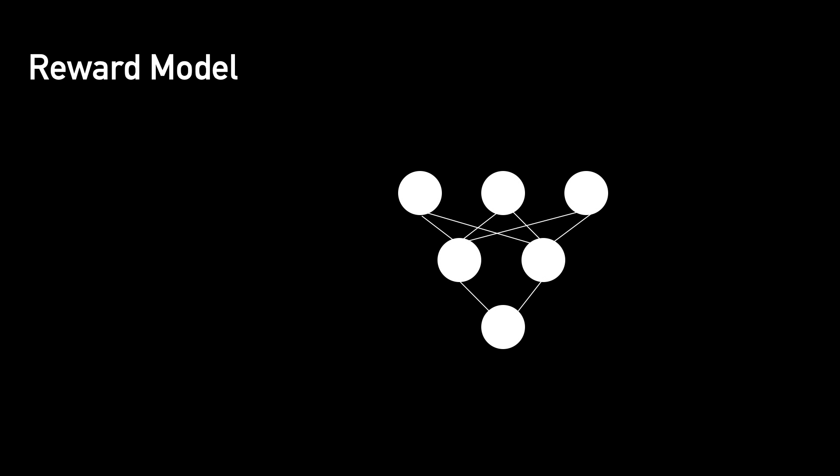But with the data from this step, we can finally train a reward model, which takes two answers and the history of the conversation as input and predicts which answer is better.